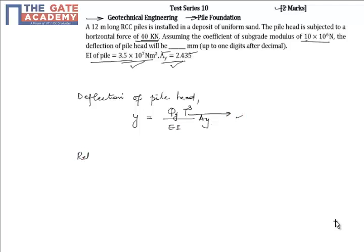Calculating Relative Stiffness Factor, T is given as EI divided by Nh raised to the power 1/5.